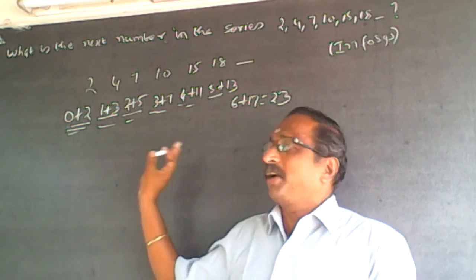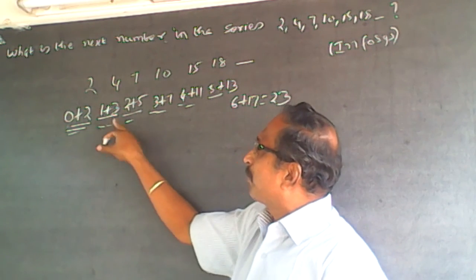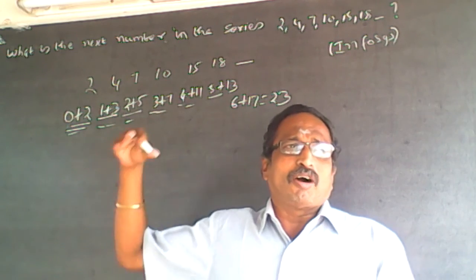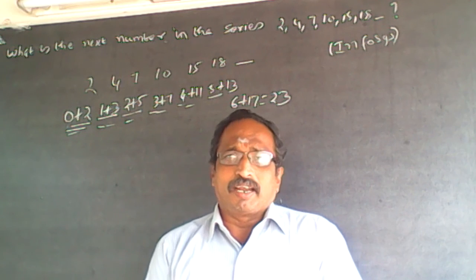This is an easy number series provided you are able to think in a 0 plus 2, 1 plus 3, 2 plus 5 way like that. If you are not able to think of those lines, your answer will be wrong or you're spending too much time in getting the answer.